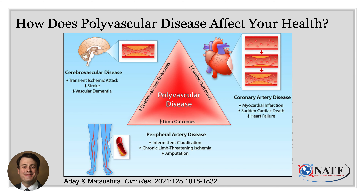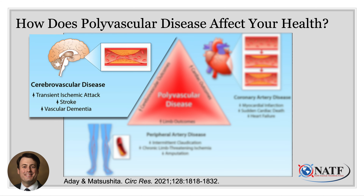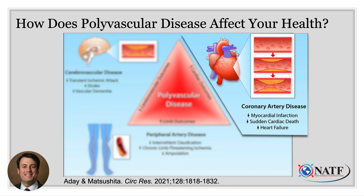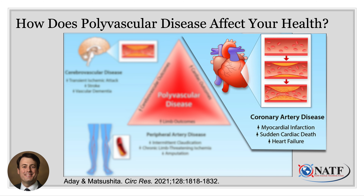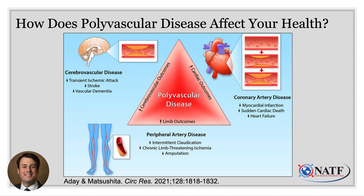How does this affect your health? Having any one component of polyvascular disease has consequences. Patients with atherosclerosis in their carotid arteries are at risk of transient ischemic attack, stroke, and vascular dementia. Those with coronary artery disease are at risk for myocardial infarction, sudden death, and heart failure. Those with atherosclerosis in their legs can develop claudication — pain in the legs when walking — pain even at rest in severe cases, ulcers, and may require amputations. Overall, when you have polyvascular disease — two or more of these — it amplifies your risk. Patients are at much higher risk of heart attack, stroke, amputation, and death.